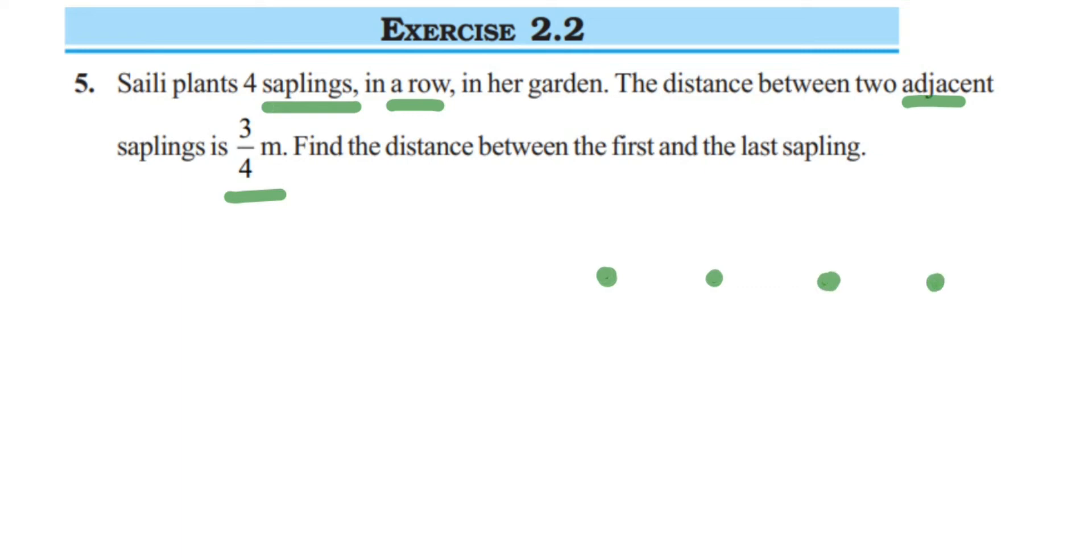Distance between these two, that is from this sapling to this sapling, the distance is 3 by 4 meter. From here to here, it is again 3 by 4 meter. They are asking, find the distance between the first and the last sapling, the total distance. This is the first sapling and this is the last sapling which is the fourth one. What is the distance between these two?